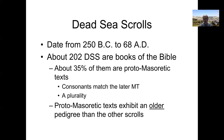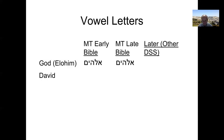This is important. Those proto-Masoretic texts actually exhibit an older pedigree than the other scrolls — older in the sense that they have fewer of what we would call vowel letters. I need to explain that a little bit. I already mentioned that in Hebrew, the alphabet was entirely consonantal. But even before the Masoretes came along, there was a realization that it was a little bit problematic to have no vowel sounds.